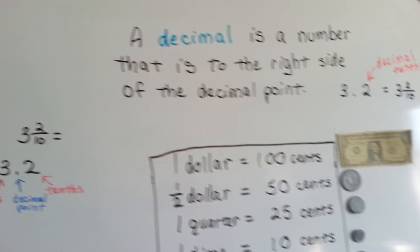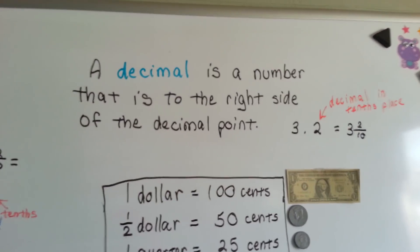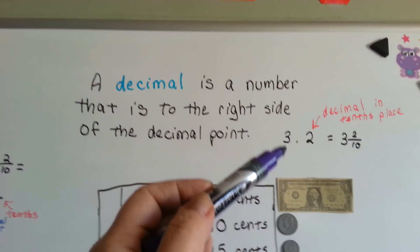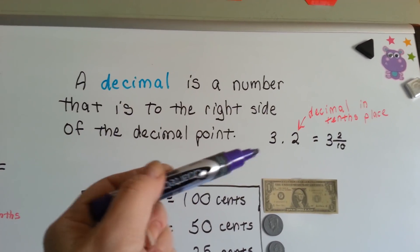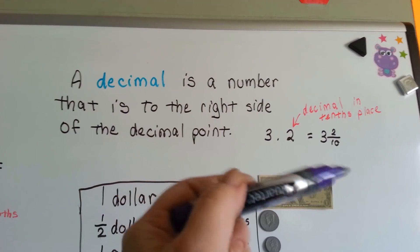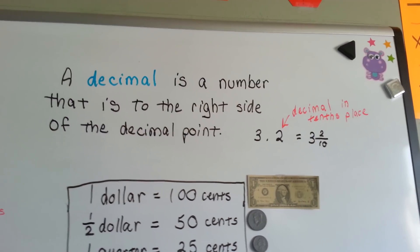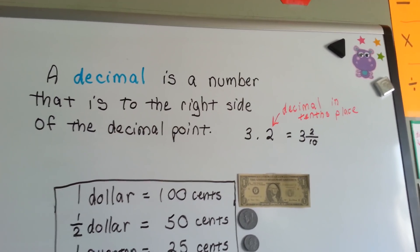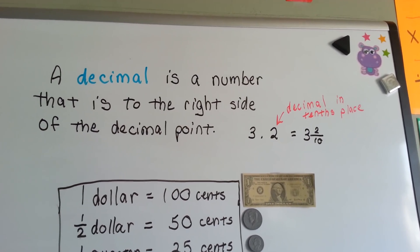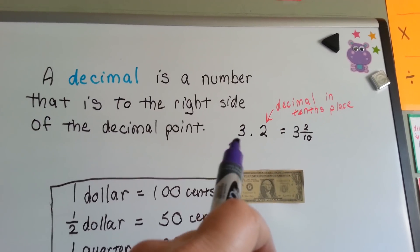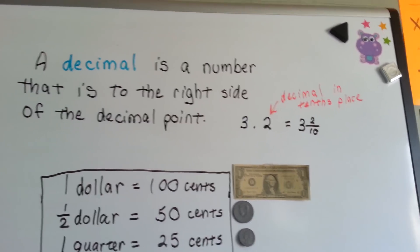A decimal is a number that is to the right side of the decimal point. See the decimal point here? All the numbers to that side of it are going to be smaller than 1, and they're going to be parts of 1, as if 1 was split into 100 parts.